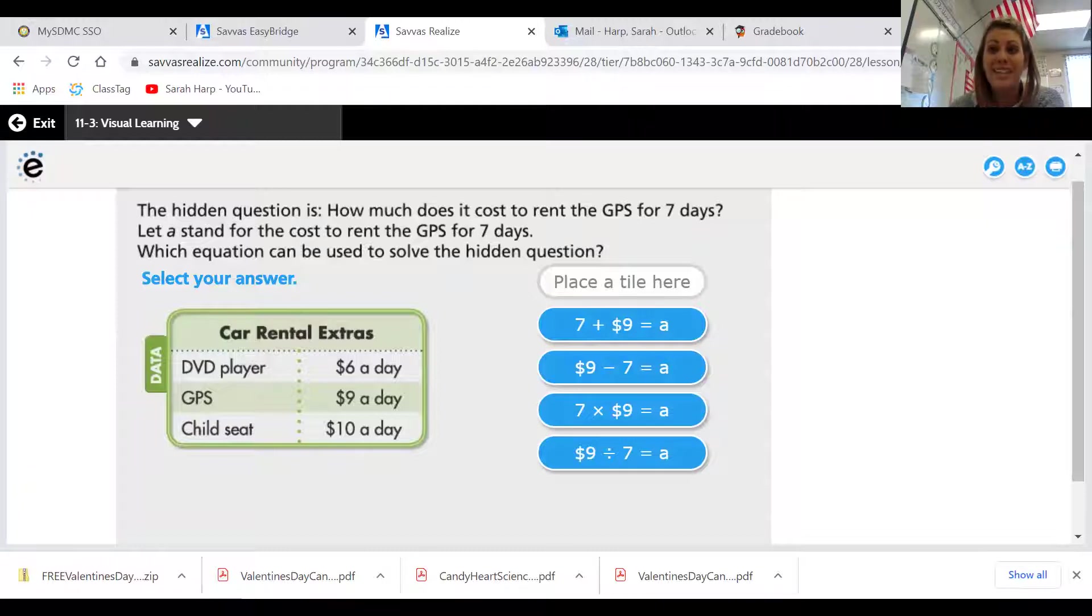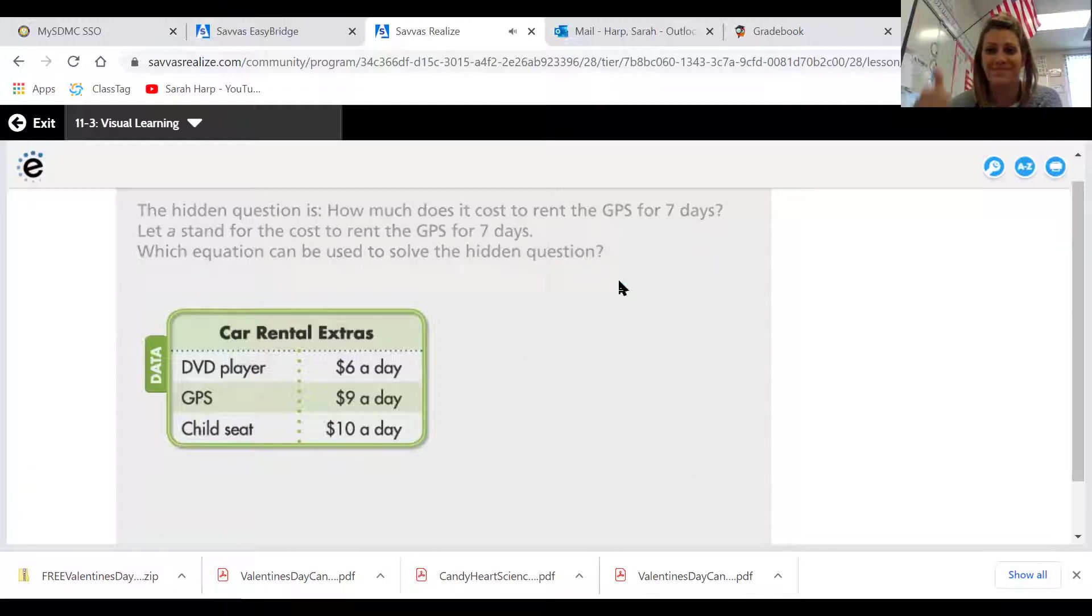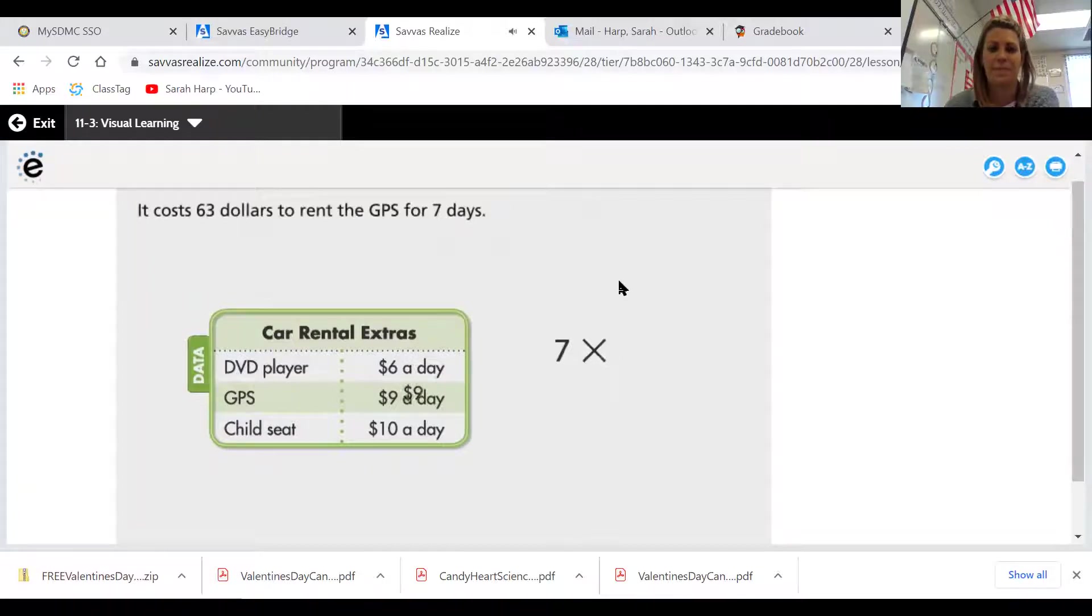Well, if you're using it each day, you would be multiplying. Seven times $9 equals A, which equals $63. It costs $63 to rent the GPS for seven days.